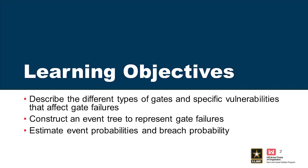So what are the learning objectives? First, describe the different types of gates and their vulnerabilities. We're not going to go into detail on some of these gates because there's so many details on, for example, a drum gate or a roller gate that we just can't cover. But this is really just to expose you to the fact that a lot of these gates have unique vulnerabilities. We'll also cover how to construct an event tree to represent a gate failure, and how to estimate event probabilities and breach probability.